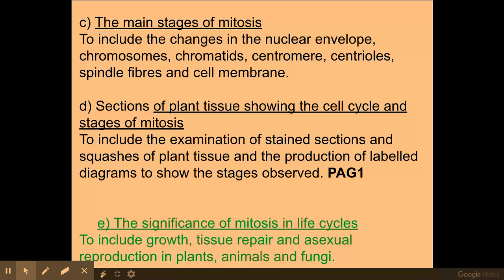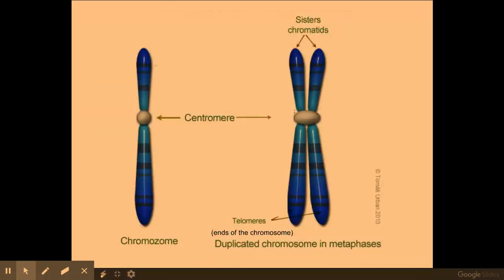We're now going to move on to the stages of mitosis, but first we need to know what a chromosome is. Students often get mixed up, thinking that only one shape is a chromosome and that two stuck together is different — that isn't the case. They are both chromosomes. The one on the right has two sister chromatids, which contain double the genetic information — the same genetic information in each chromatid — and this chromosome is ready for cellular division in mitosis.